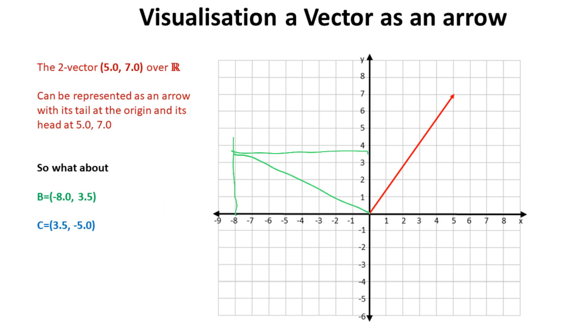3.5 should bring us out to here. Minus 5 should bring us out to here. And so this vector should be like that.